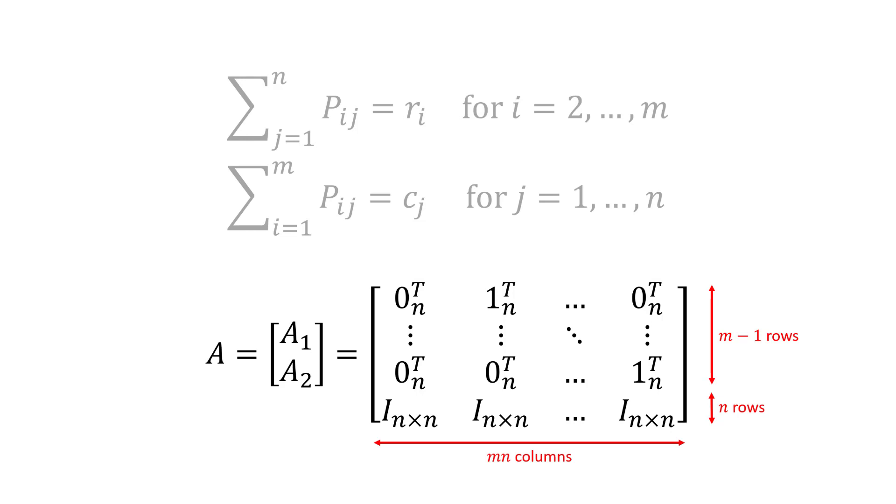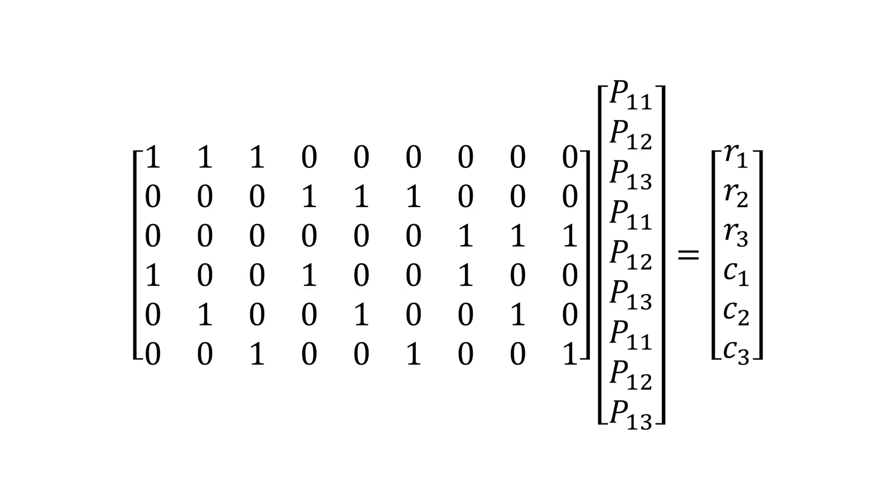We can now write out the matrix A explicitly. The top m minus n rows encode the first set of constraints, that is, those on the row sums of p, and the bottom n rows encode the second set of constraints, that is, those on the column sums of p. The matrix A has m times n columns, which is the number of entries in the matrix p. Let us consider a concrete small 3 by 3 example.